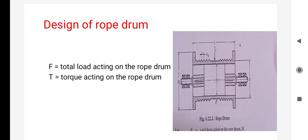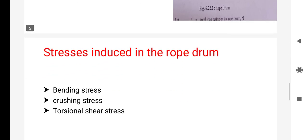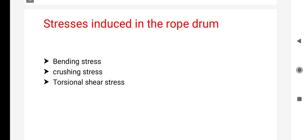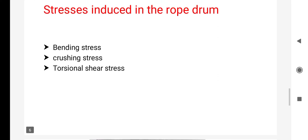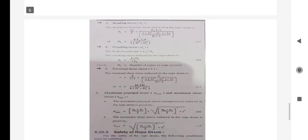For the design of rope drum, we have to see the stresses induced in the rope drum. There are three stresses induced: first is bending stress, second is crushing stress, and third is torsional shear stress. There are formulas for these stresses.